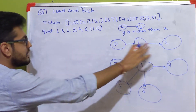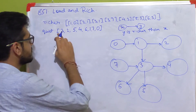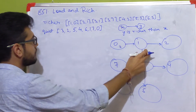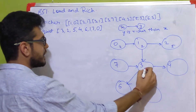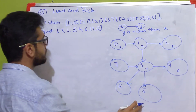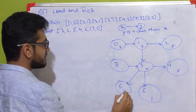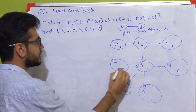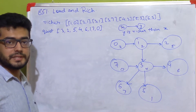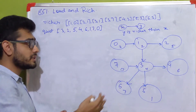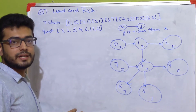Now let's add the quietness values to all these nodes. Quietness level of 0 is 3, for 1 it's 2, for 2 it's 5, for 3 it's 4, for 4 it's 6, for 5 it's 1, for 6 it's 7, and for 7 it's 0. What we actually need to find is, for each person, who is the person who is at least as rich as that person and whose quietness value is minimum.